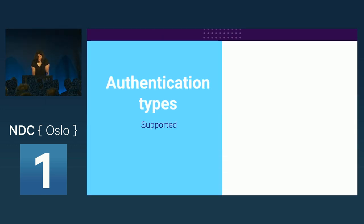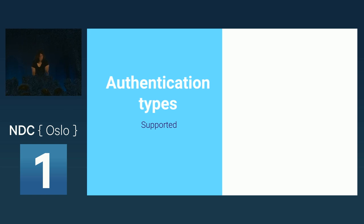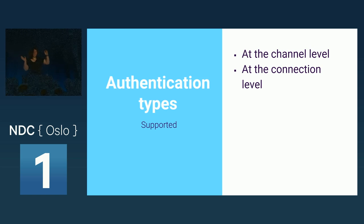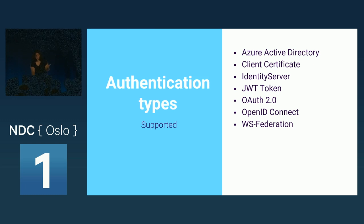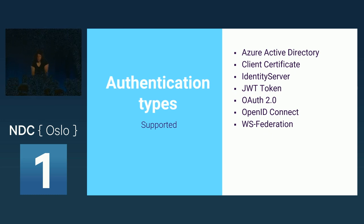Security-wise, whatever your Web API supports, gRPC supports too. You will have two options: at the channel level — the HTTP level — and then at the more granular level over a single TCP call. So you have the HTTP and then the gRPC call inside it. It supports Azure AD, client certificates, Identity Server, JWT, OpenID Connect — everything that's available pretty much. And it covers a lot of scenarios.